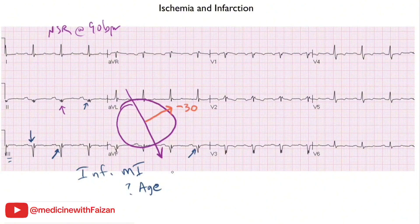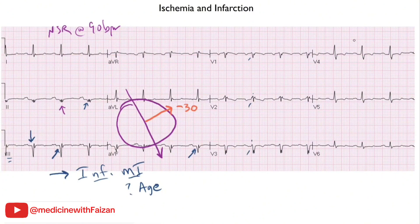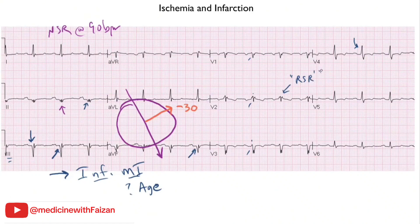These Q waves allow you to diagnose an old inferior wall MI of indeterminate age. Examining the anterior leads, R wave progression is not great — tiny R waves in V1, V2, V3, only about 1 mm in V3, though it grows fairly sizable in V4, which may reflect lead positioning. There is also a little interventricular conduction delay — the QRS complex is about 100 ms wide and almost looks like an RSR prime. Many would call this a right IVCD or non-specific IVCD, likely just reflecting damage to the Purkinje system in the inferior wall.